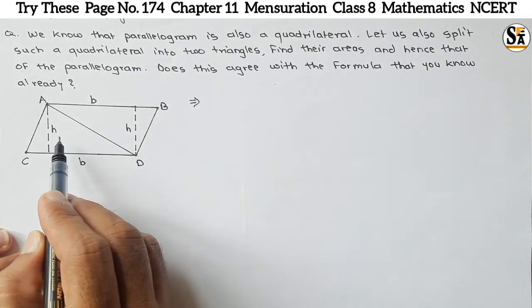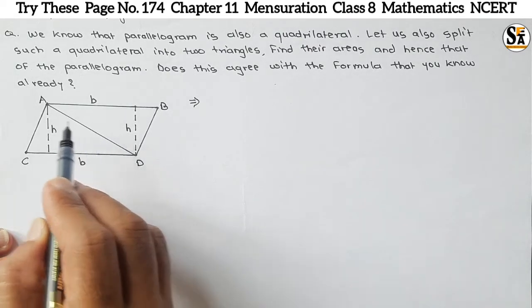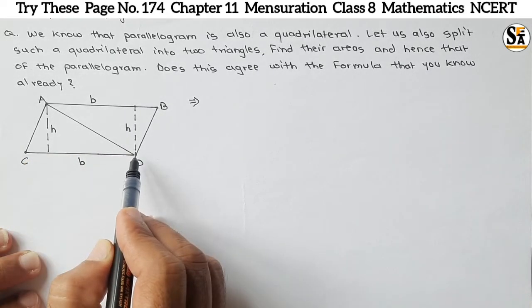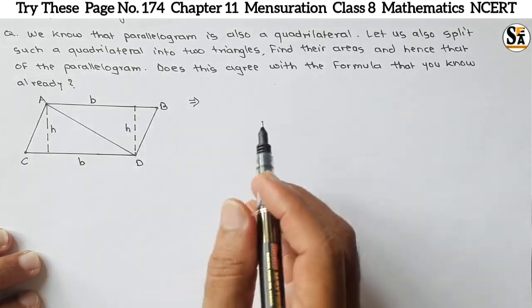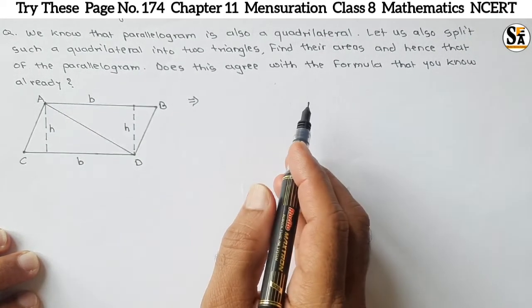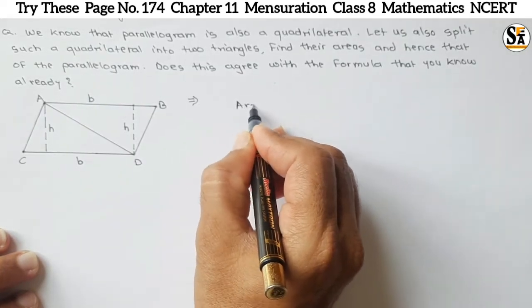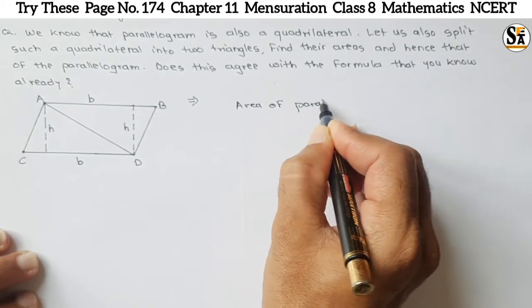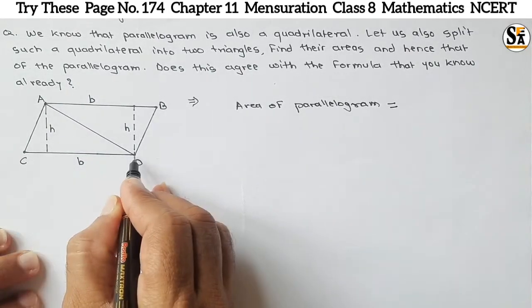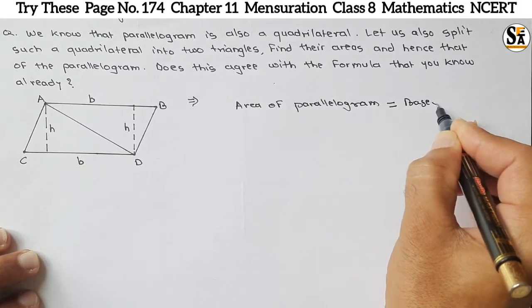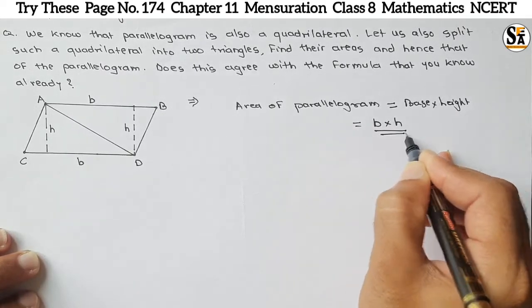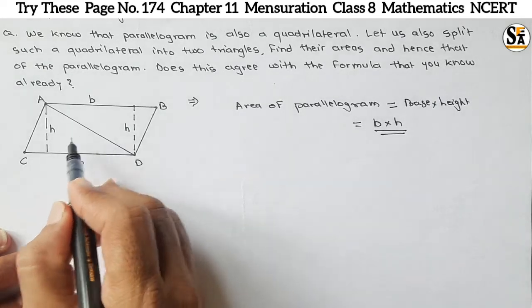We need to find the areas of these two triangles, and when we add them we should get the area of the whole parallelogram. Does this agree with the formula we know? The formula we know is: area of parallelogram is equal to base into height, that is B into H. We have to prove that adding the areas of these two triangles gives us B × H.